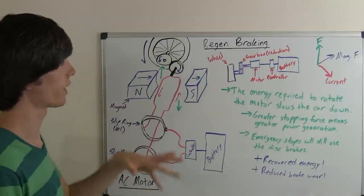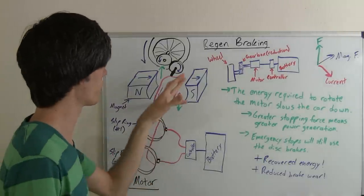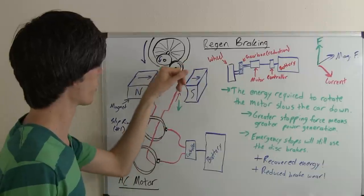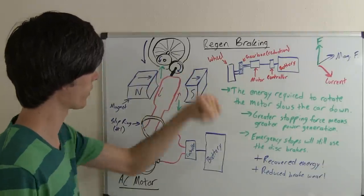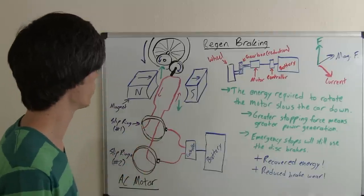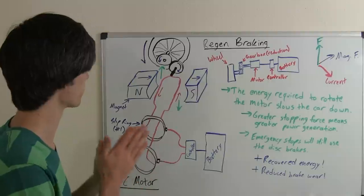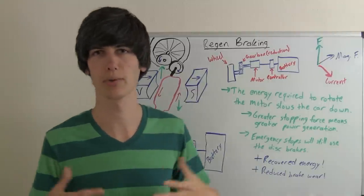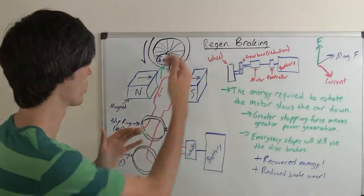So regenerative braking - all we're doing, when you watched my video on AC power generation, you noticed I had a hand crank, and you just hand crank to create the alternating current to supply power to something. We're getting rid of that hand crank and in its place, we're putting a wheel.